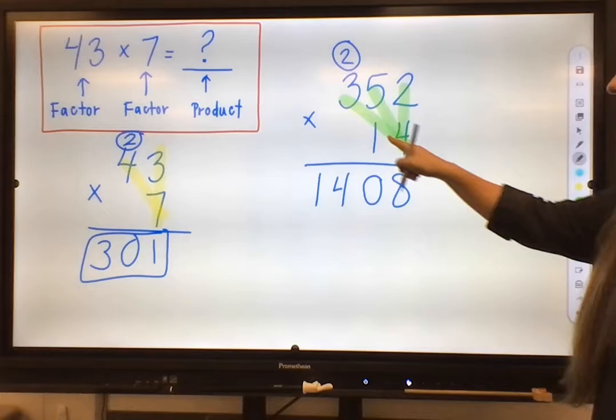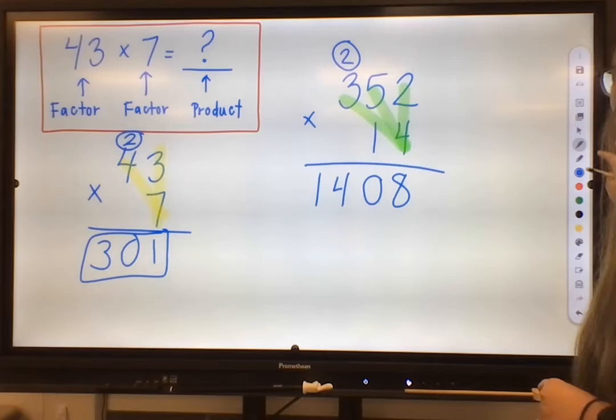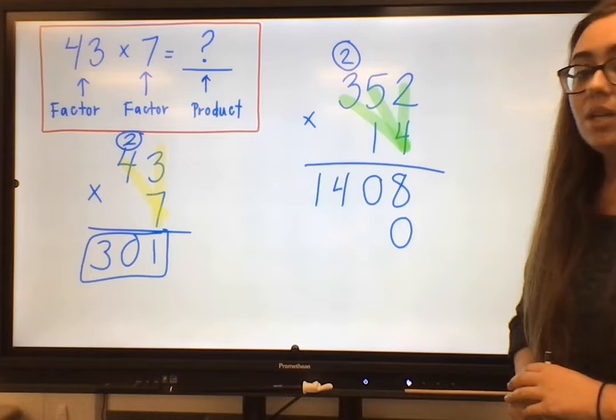For the next step, we have this 1. Now this 1 does not just represent 1. It actually represents 10 because it's in the 10's place here. So we have to recognize that as we're solving. So in order to remember that, we put a placeholder 0 in this 1's place right here.